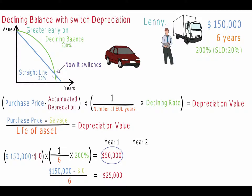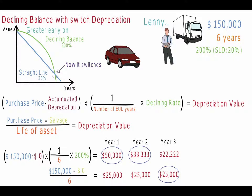For year two, the declining method will give him a depreciation value of $33,333. Straight line will continue to have a depreciation value of $25,000. Again, Lenny will use the declining balance depreciation method as it still has a higher depreciation value. For year three, the declining method will give him a depreciation value of $22,222. Lenny will now use the straight line depreciation method for the asset's remaining life, as it now has a greater depreciation value of $25,000.